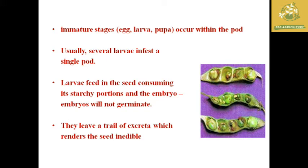We can see shriveled, stripped, and partially eaten seeds in the pod. The immature stages — egg, larva, and pupa — occur inside the pod. Several larvae can infest a single pod, consuming the scratch portion as well as the embryo, making seeds non-viable. Seeds can be fully eaten, and the larvae also leave trails of excreta, making the seed inedible.